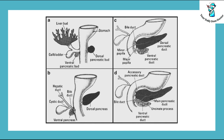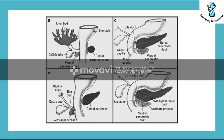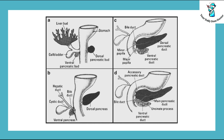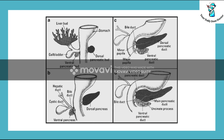In picture C, we can see that as the duodenum rotates to the right, assuming a C-shape, the ventral pancreatic bud continues its rotation before fusing with the dorsal pancreatic bud. In picture D, the dorsal pancreatic bud forms the body and the tail of the pancreas.